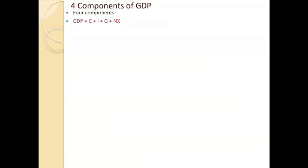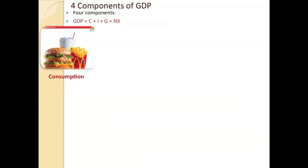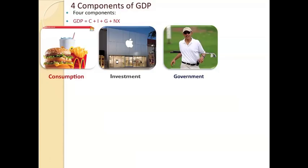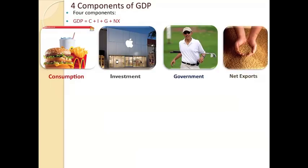Now there are fundamentally four components of GDP. GDP is equal to C plus I plus G plus NX. The C stands for consumption — that's all the spending done in the economy by people like you and I, consumers. So we go to McDonald's and buy a value meal — that's consumption spending. The I is investment. Investment spending represents all the spending done by businesses, by firms in the economy. So Apple opens up a store in St. John's Town Center — this is investment spending. G represents government spending. Our government is a major player in the economy and spends just like consumers do. And finally, NX stands for net exports — the total amount of stuff that we sell to other countries minus the total amount of stuff that we buy from other countries, or exports minus imports.